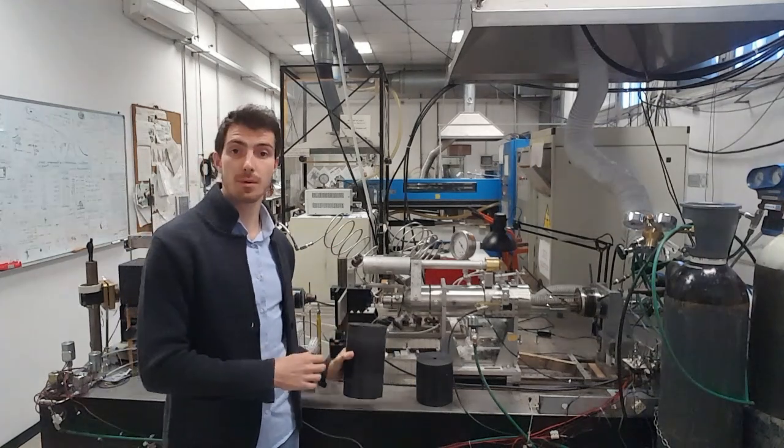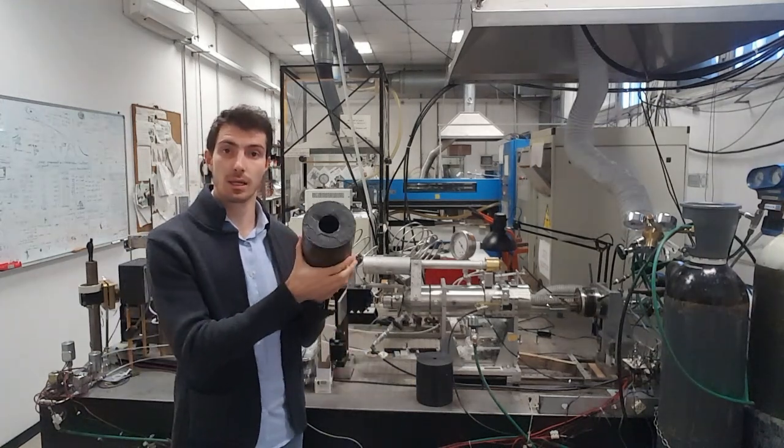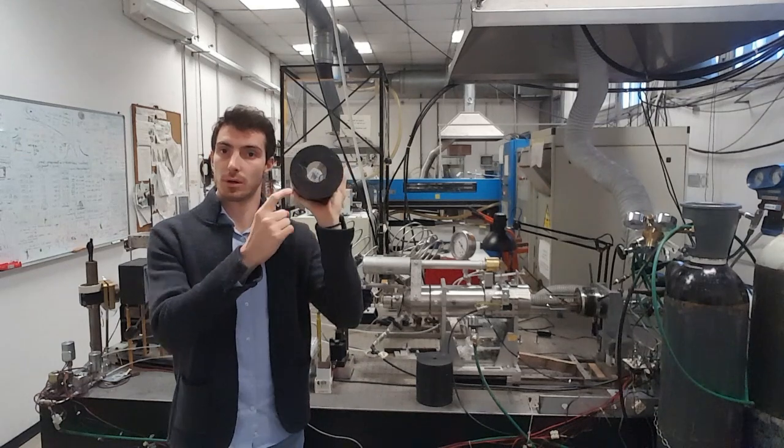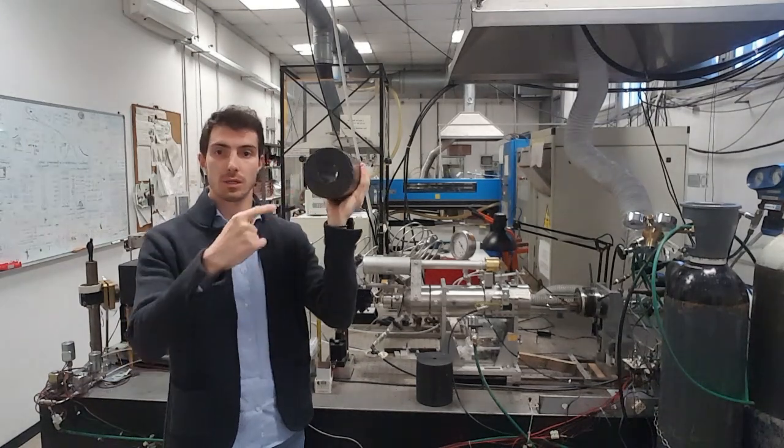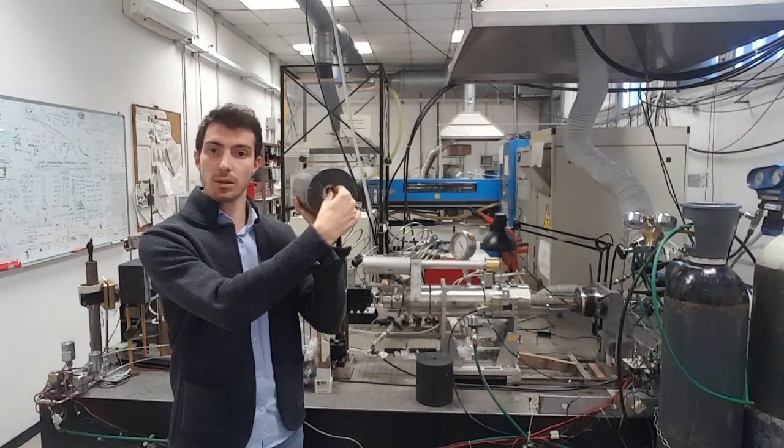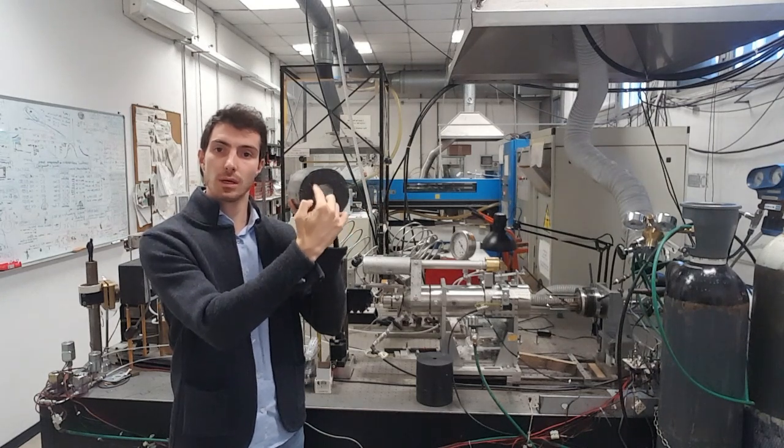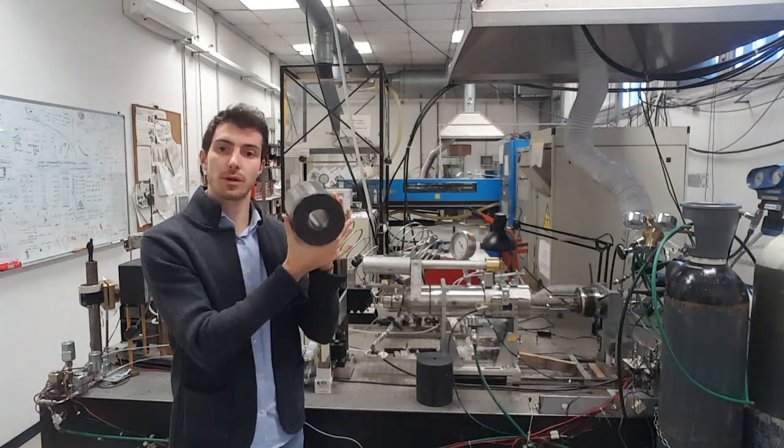In conventional hybrids, the solid fuel is a cylindrical grain with a central perforation. The gaseous oxidizer is injected in the fuel's central port. The flame establishes and the fuel burns, providing thrust to the rocket.